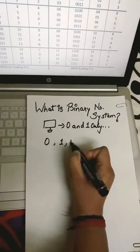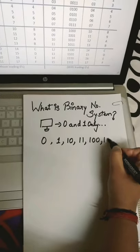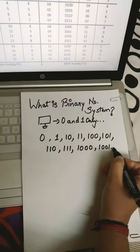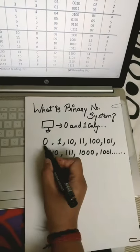These are the digits which are 0 and 1: 0, 1, 10, 11, 100, 101, 110 and so on. This will go to infinity.